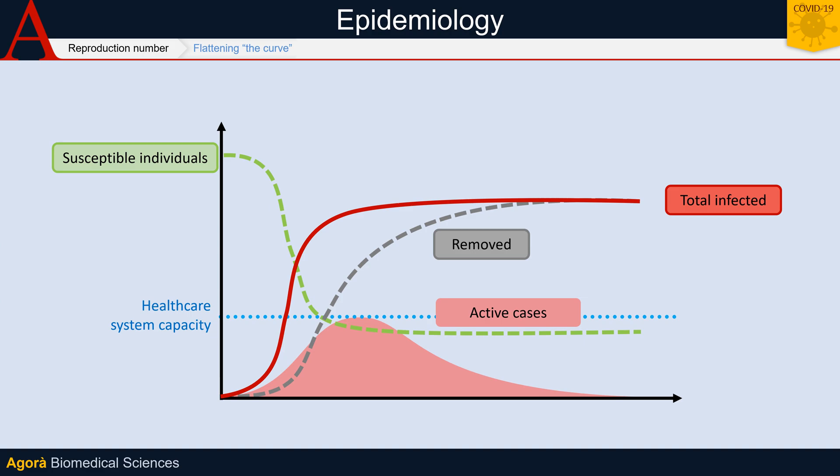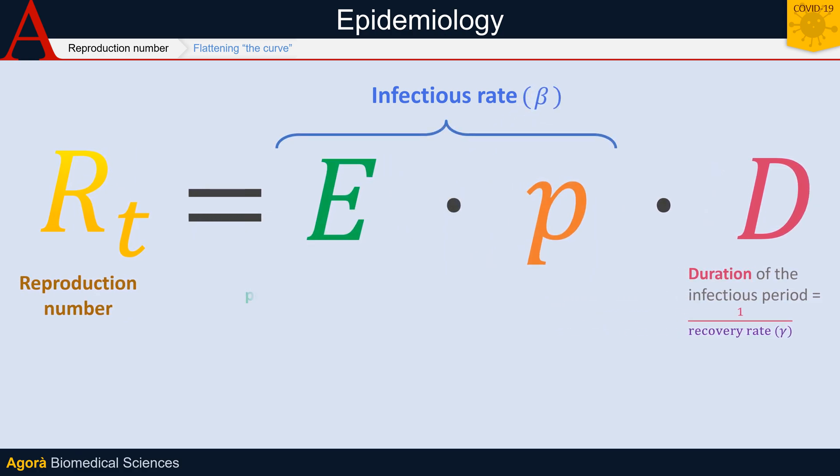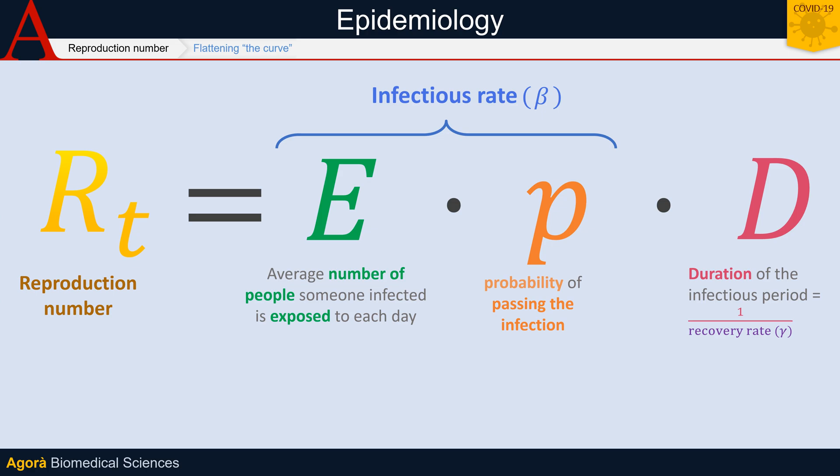Keeping R_t low is important so that healthcare professionals can manage all patients adequately within the limits of their resources. When we talk about flattening the curve, this is exactly the curve we're talking about — the curve of active infections. R_t depends on the infectious rate: the number of new infections generated by an individual per unit of time, and the duration of the infection. We can break down beta as the number of contacts multiplied by the probability that each contact will transmit the infection.